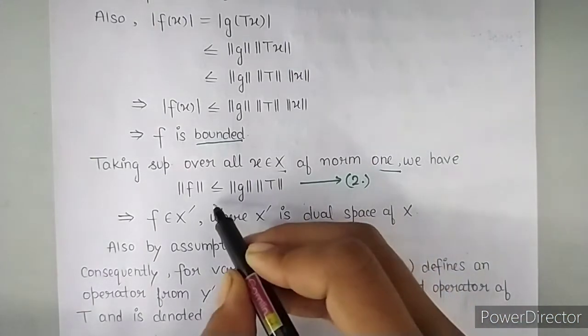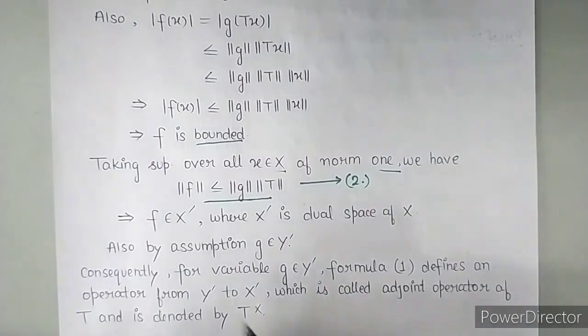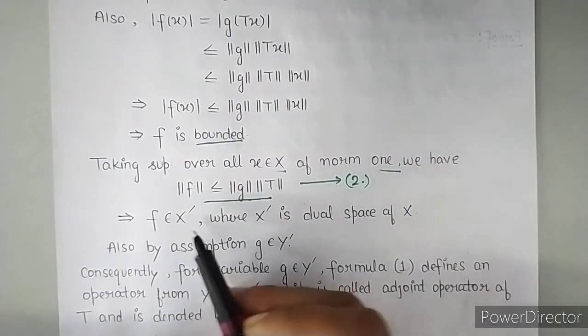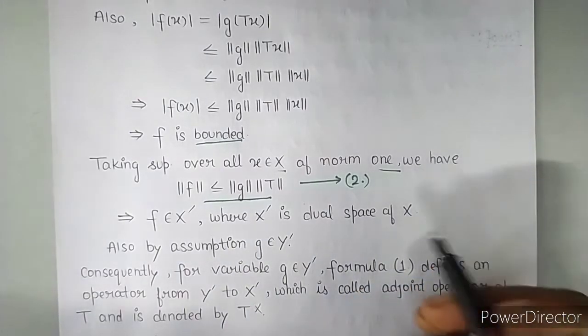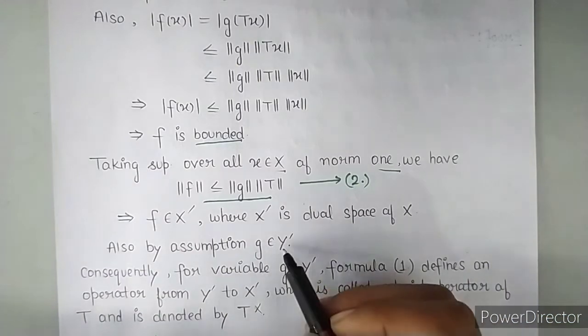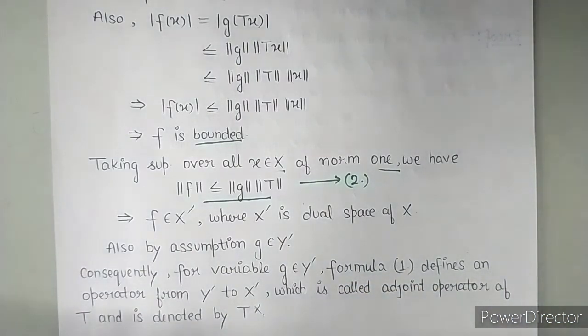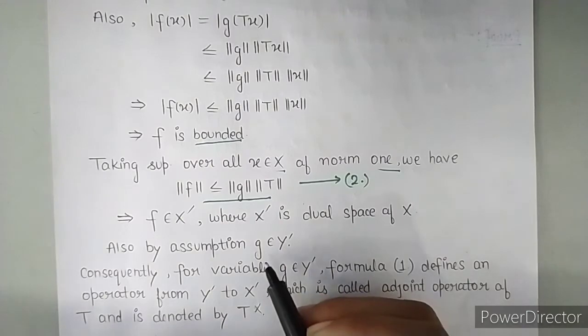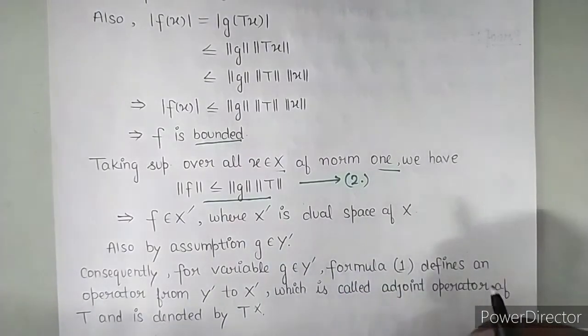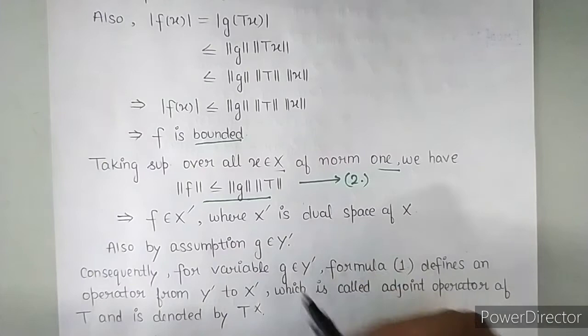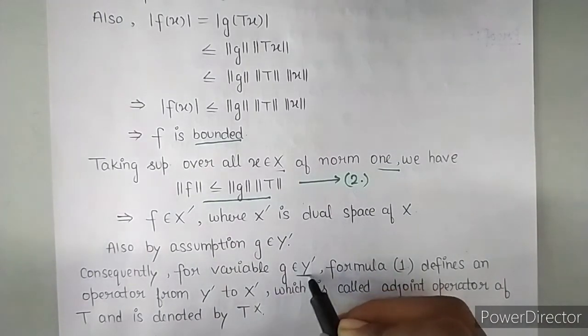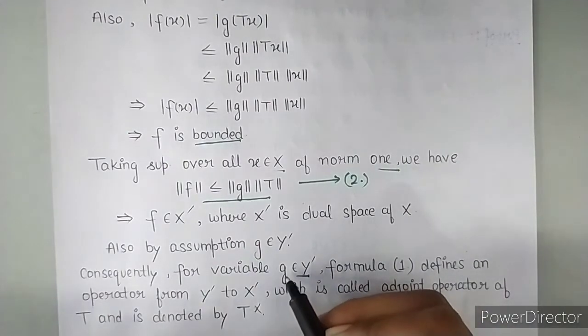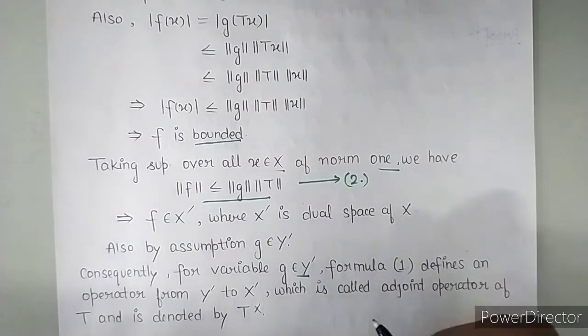So if you look at this, isn't this in the form of dual space definition? That means this F belongs to dual space of X. So F belongs to X dash where X dash is dual space of X. And also by assumption G belongs to Y dash. G belongs to the dual space of Y. Because G is a bounded linear operator defined on Y. So where will it go? In the dual space of Y.